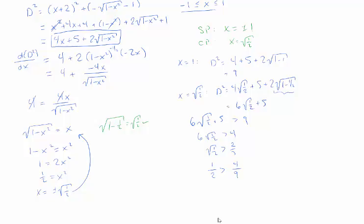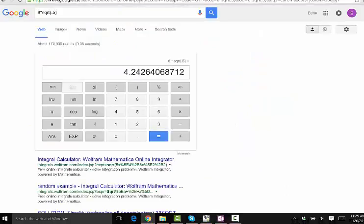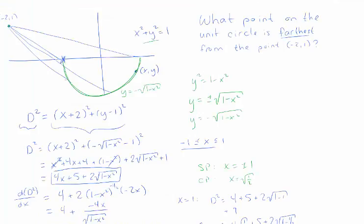The actual difference actually isn't that great. So the distance from my point to 1 is 9. And the distance from my point to x equals 1 half is 6 times the square root of 1 half plus 5, which is about 9.24. We have to add that 5. So we're just a little bit further away at that point than we are at the end point. So the furthest point from the circle is going to be when x is the square root of 1 half, which is going to mean that y is the negative square root of 1 minus 1 half, which is the negative square root of 1 half.